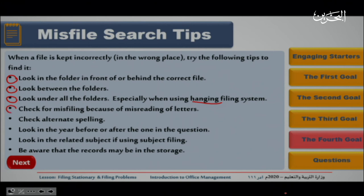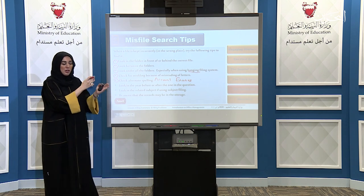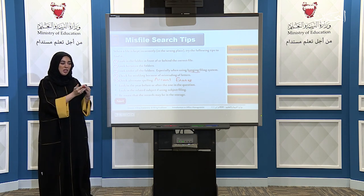Fourth, check for misfiling due to misreading of letters — for example, the letter B may have been read as P by mistake, so search under the other letter. Fifth, check alternate spelling — for instance, some organizations call a department 'accounts' while others call it 'finance,' so check under both names.